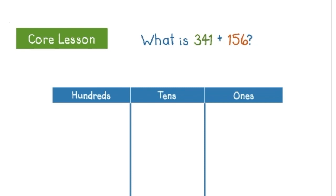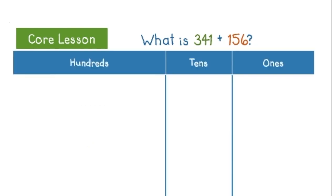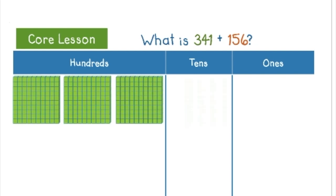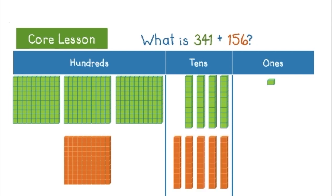I'm breaking up 341 into three hundreds, four tens, and one one. And I am adding 156 to that number. In 156, there is one hundred, five tens, and six ones. So here is a bigger hundreds, tens, and ones chart so I can draw in all those base ten blocks. Here's 341: I have three hundreds, four tens, and one one. I am adding 156: that is one hundred, five tens, and six ones.